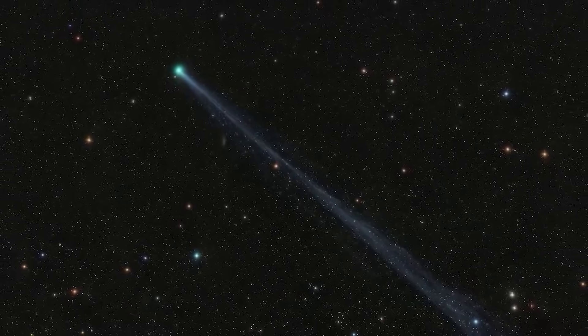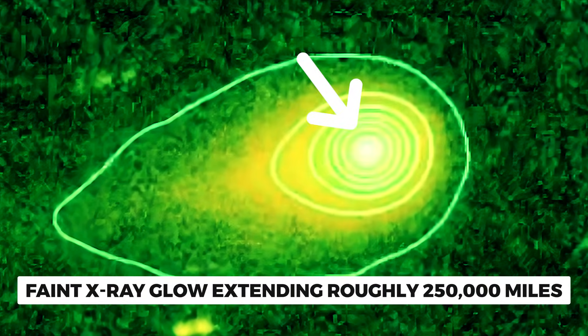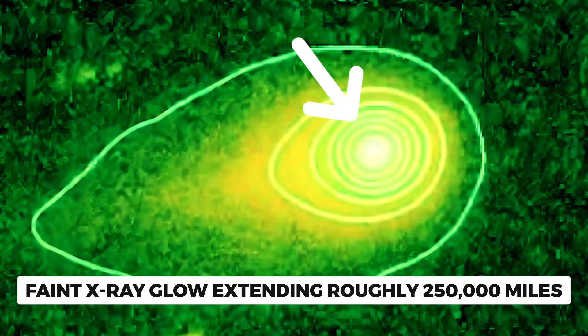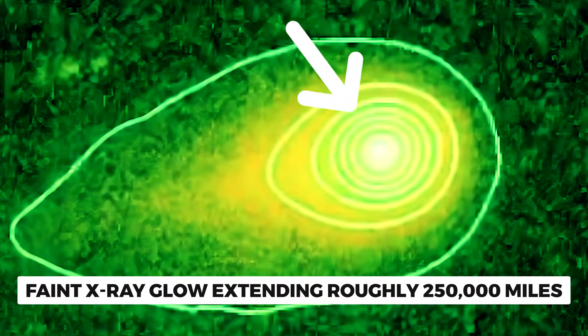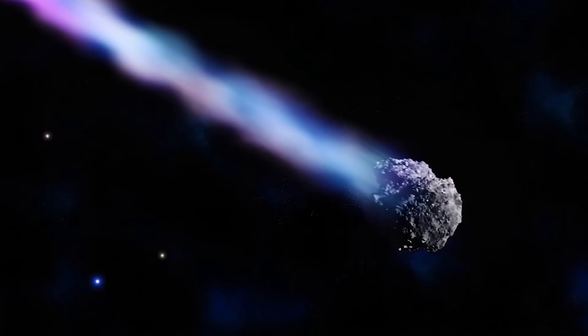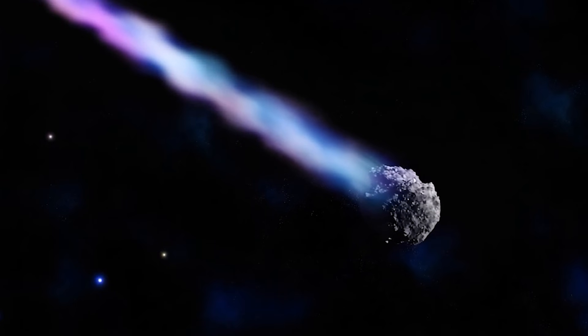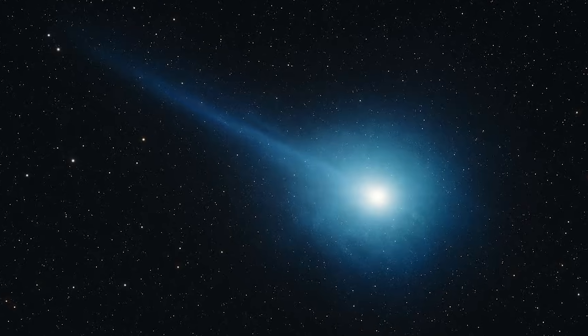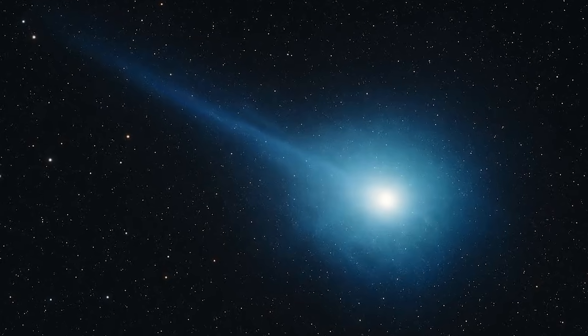And what those instruments revealed was stunning. A faint X-ray glow extending roughly 250,000 miles around the comet's nucleus. This wasn't a brief flash or a localized hotspot. This was a massive, diffuse cloud of X-ray emission surrounding the entire object.